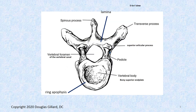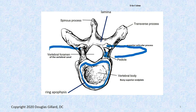From an overhead view, we can see the pedicles quite nicely. Here is the ring apophysis — remember we talked about that — that's where secondary growth centers occur, where a kid grows in height. And another weird thing: look at the transverse processes. Normally transverse processes stick straight out, but these are swept back. That's another way you can tell this is a thoracic vertebra. At some levels like T11 and T12, they're just little stubs.